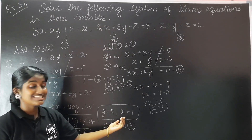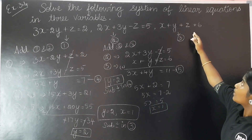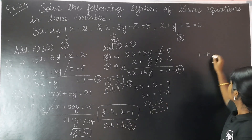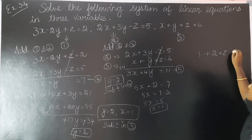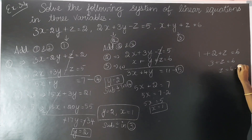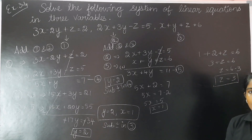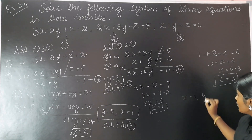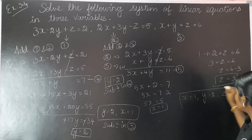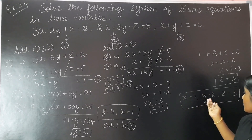Now we substitute x equals 1 and y equals 2 into the third equation. The third equation is x plus y plus z is equal to 6. So 1 plus 2 plus z equals 6. 1 plus 2 is 3, so 3 plus z equals 6, which means z equals 6 minus 3, which is z equals 3. So the answer is: x is equal to 1, y is equal to 2, z is equal to 3.